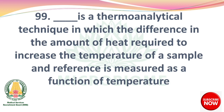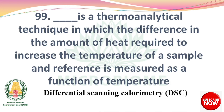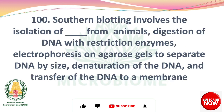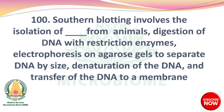Next, dash is the thermoanalytical technique in which the difference in the amount of heat required to increase the temperature of a sample and reference is measured as a function of temperature — differential scanning calorimetry (DSC). Next, Southern blotting involves the isolation of DNA from animals, digestion of DNA with restriction enzymes, electrophoresis in agarose gels to separate DNA by size, denaturation of DNA, and transfer of DNA to a membrane. If you have any doubts, please ask in the comment section. For more videos, please subscribe to our channel. Thank you.